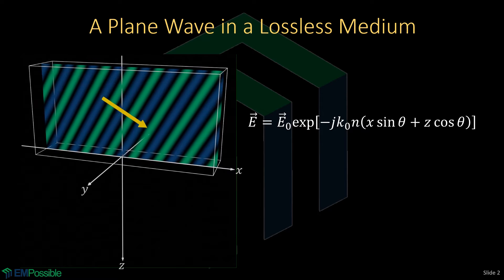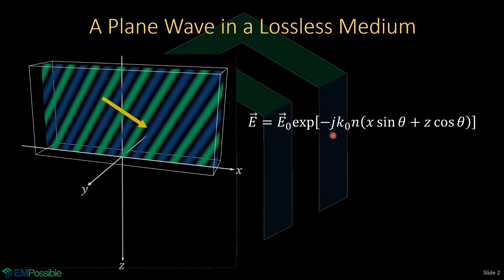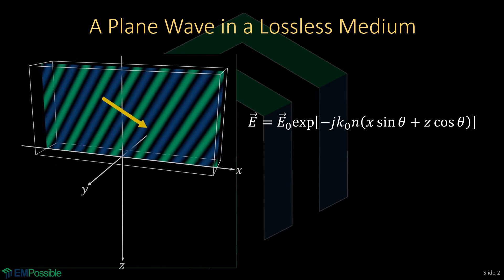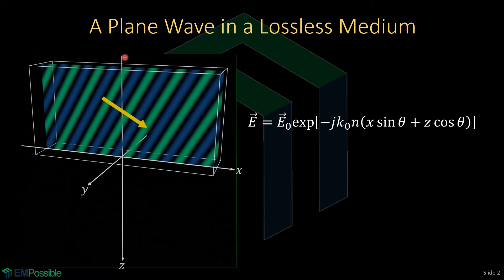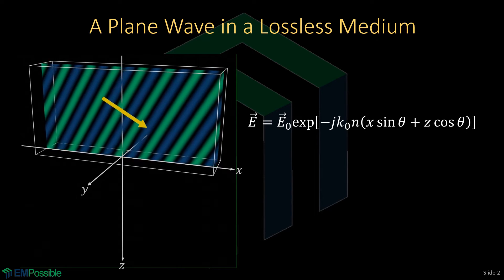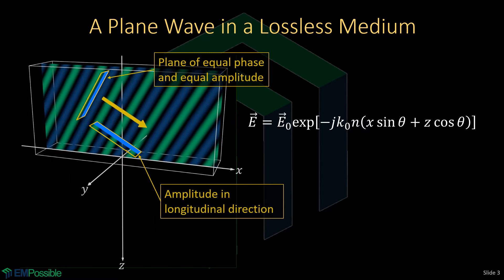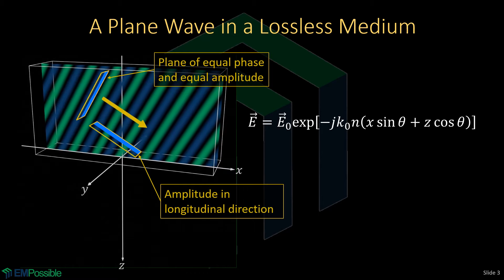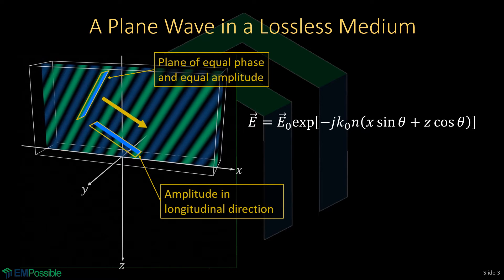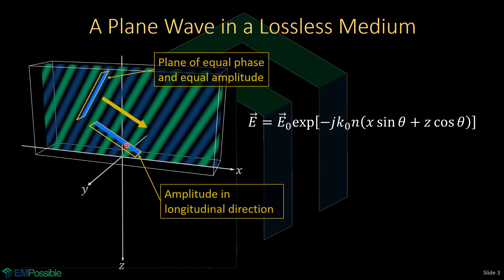We're using the negative sign convention, expressing our wave as negative j — j being the square root of negative one — times the free space wave number, times the refractive index, times this expression in parentheses. The angle of this wave relative to the normal is theta. We can look at a plane perpendicular to the direction of the wave and observe that in this plane the phase of the wave is constant. We can also look in the direction of the wave, and since the wave is not decaying, that is also uniform.